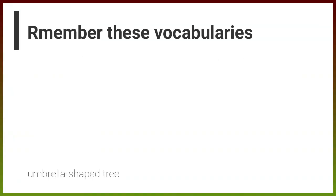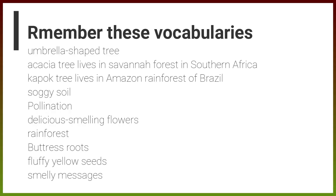Before we end this lesson, remember these vocabularies: umbrella-shaped tree, acacia tree, kapok tree, soggy soil, pollination, delicious-smelling flowers, rainforest, buttress roots, fluffy yellow seeds, smelly messages.